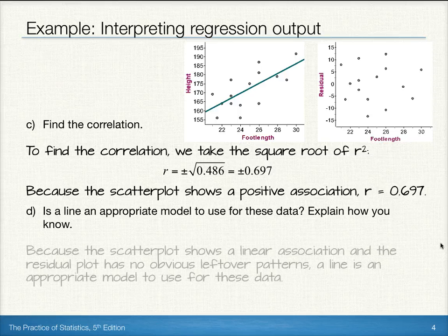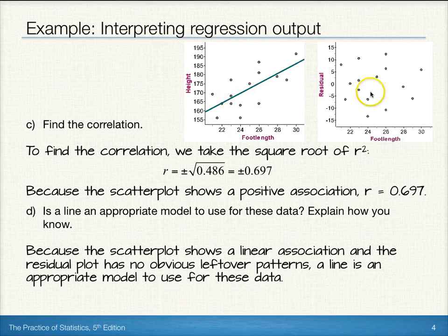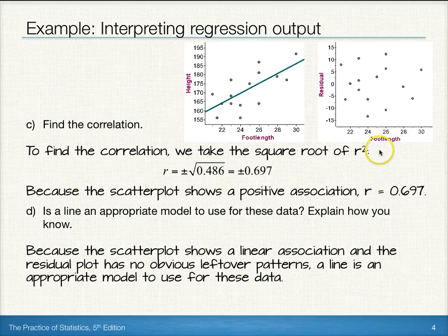Looking at these two, we can see that the scatter plot does show a linear association overall, and the residual plot doesn't have any obvious leftover patterns. So we can say that a line is an appropriate model to use for these data.